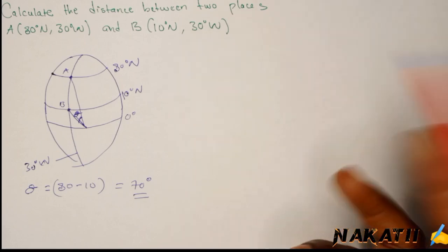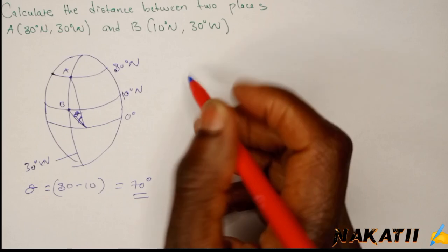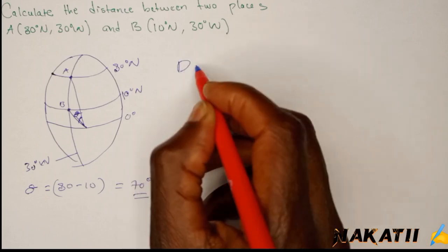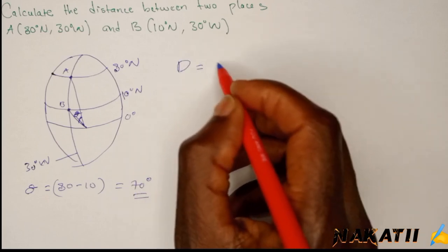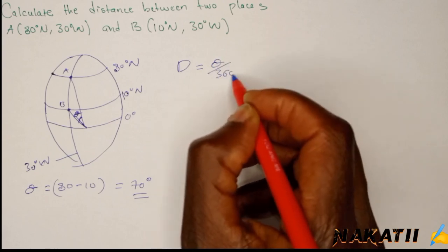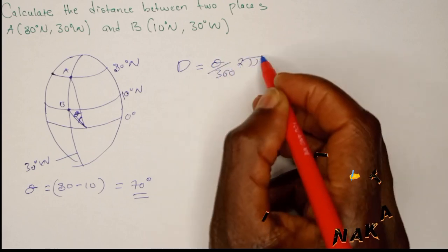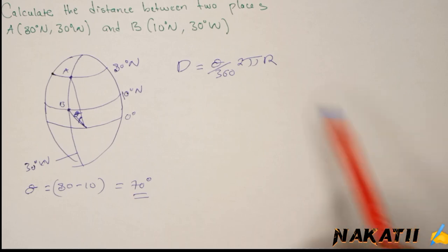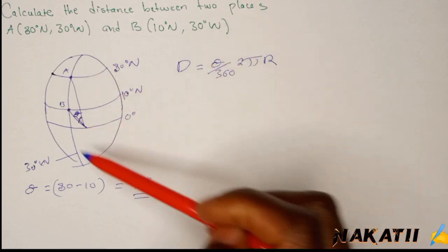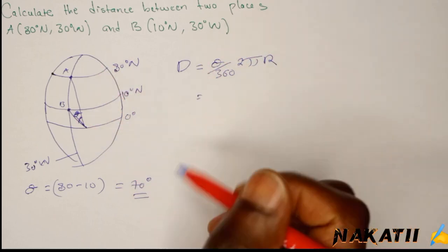You can say distance is theta over 360 times 2 pi r. This is the formula because they are on a great circle, we use this formula.